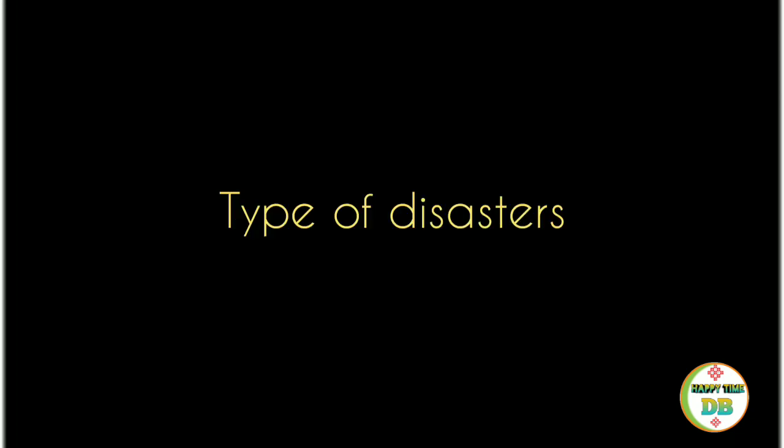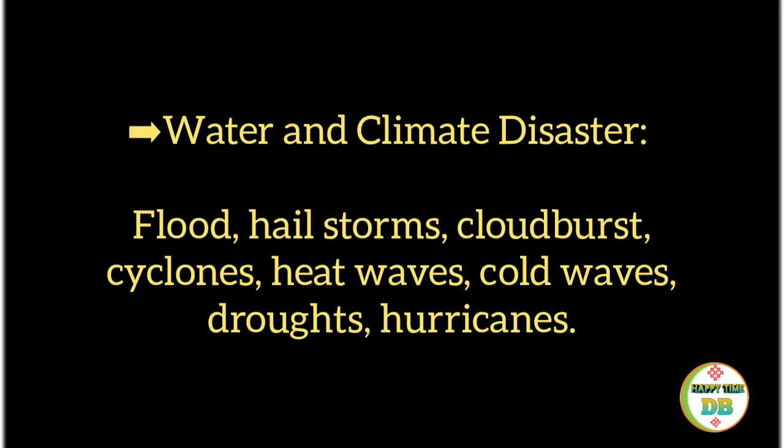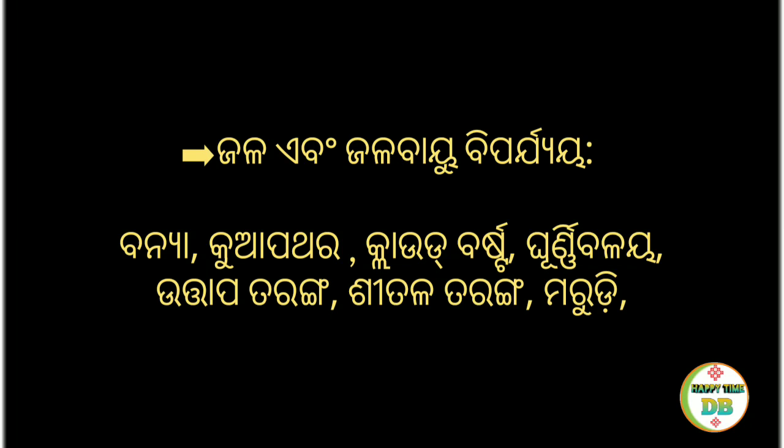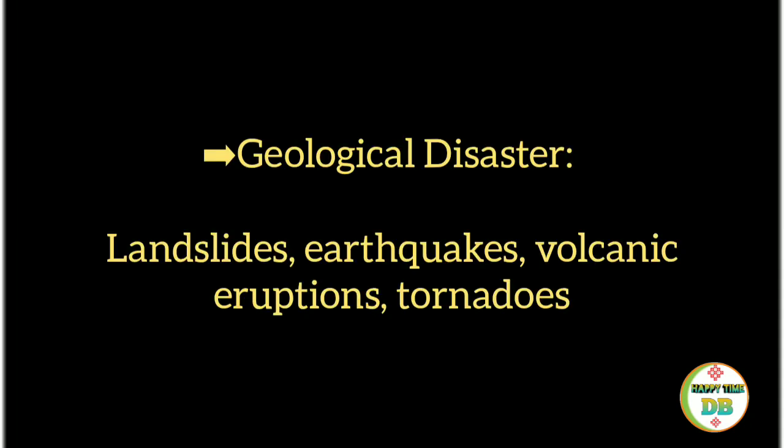Types of Disasters. Water and Climate Disasters include floods, hailstorms, cloudbursts, cyclones, heatwaves, cold waves, droughts, and hurricanes. Geological Disasters include landslides, earthquakes, volcanic eruptions, and tornadoes.